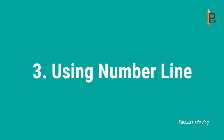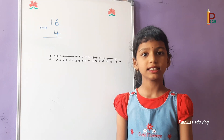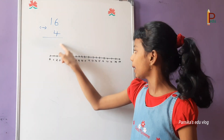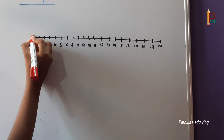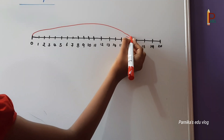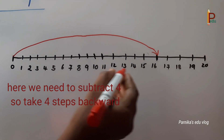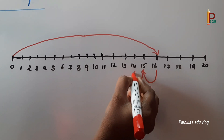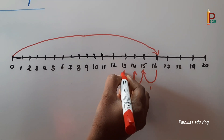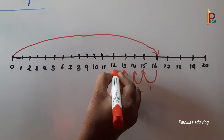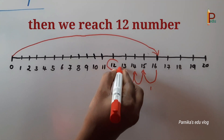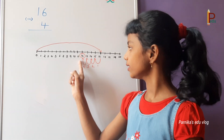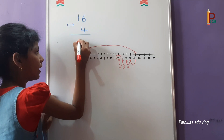Number 3: Subtraction using a number line. Let's subtract 4 from 16. First, jump from 0 to number 16. Here we need to subtract 4, so take 4 steps backward: 1, 2, 3, 4. Then we reach number 12. So the answer is 12. Write 12 here.